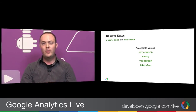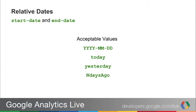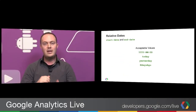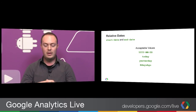Another thing we released this past month was relative dates in the Core Reporting API. This was a feature requested by users and it's quite powerful — it helps if you're building reports that are ongoing and you want them to be relative to a specific date. Whenever you make a request, you need to provide a start date and end date. The acceptable values have always been year-month-day, but we've now added three new values: today, yesterday, and NdaysAgo. With these three values, you can create any query you'd like with relative dates for any period of time.